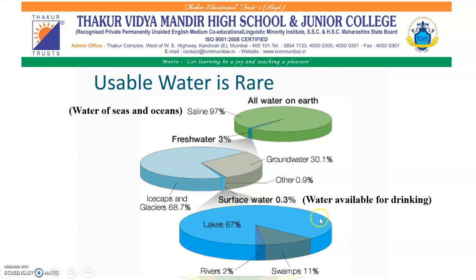This surface water is further divided as shown in this picture. This area shows the total surface water. 87% of this surface water is in the form of lakes, 11% is in the form of swamps — swamps means an area of low lying uncultivated ground where water collects — and only 2% is in the form of rivers.